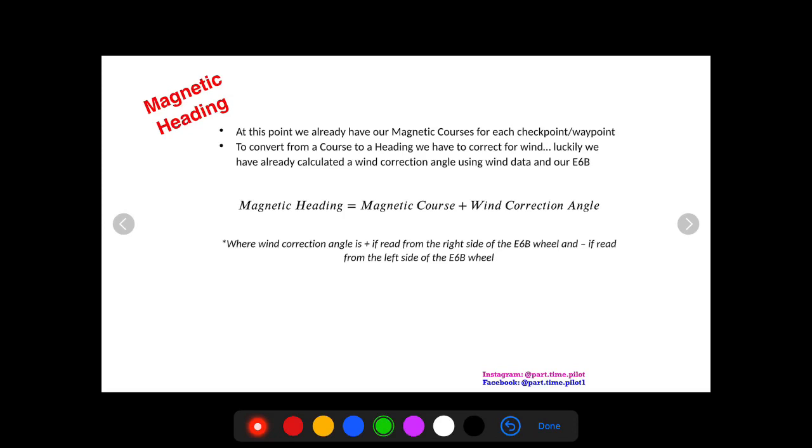And to do that, to convert from a course to a heading we have to correct for wind. Luckily we just did this in our last video. We found the wind correction angle and ground speed using the wind data in our E6B. If you want to check out that video just click on the little eye up here that pops up in the corner and it'll show you how to find the wind correction angle.